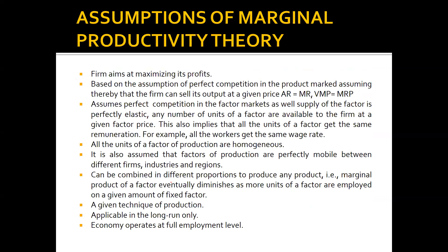The assumptions of the marginal productivity theory are: firms aim at maximizing profit; perfect competition is assumed in the product market, so AR equals MR and VMP equals MRP; perfect competition is also assumed in the factor market, where supply of the factor is perfectly elastic — any number of factor units are available at a given price. This also implies all units of a factor receive the same remuneration, and all units of the factor are homogeneous.